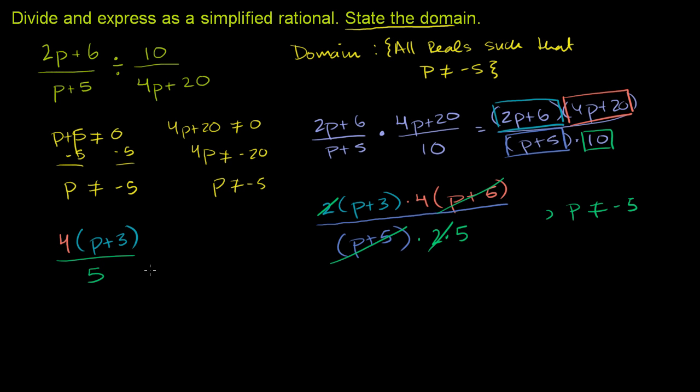But we don't want to forget, we have to add the constraint. p cannot be equal to negative 5, so that this thing is mathematically equivalent to this thing right here.